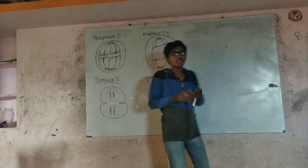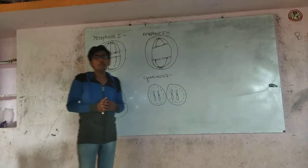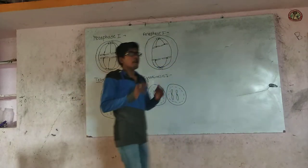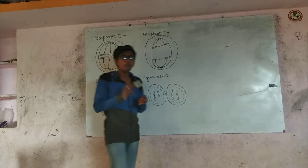Hi friends. Meiosis I consists of 4 phases. They are Prophase I, Metaphase I, Anaphase I, and Telophase I.